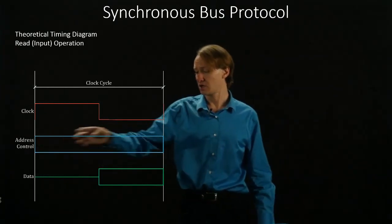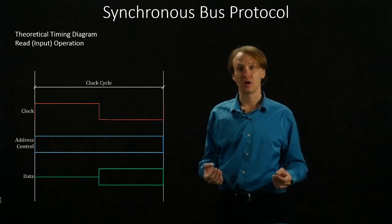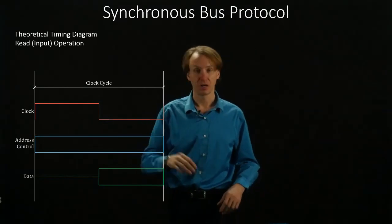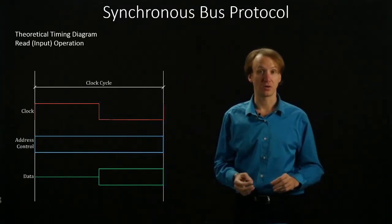So throughout the entire cycle, the address and control lines are set. They're initially set to whatever the CPU needs them to be, and they just stay that way throughout the entire clock cycle.